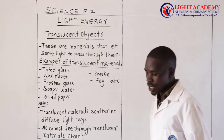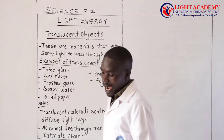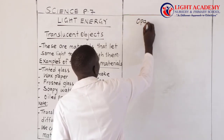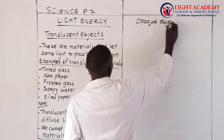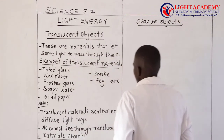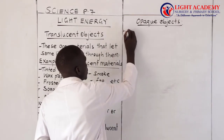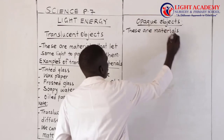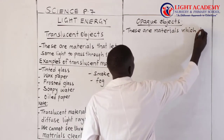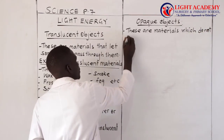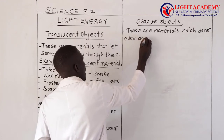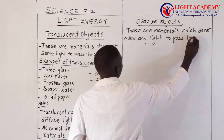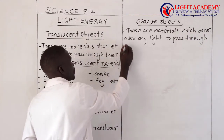Apart from the translucent, you have materials which we call opaque. Let us look at opaque objects. These are materials which do not allow any light to pass through them.